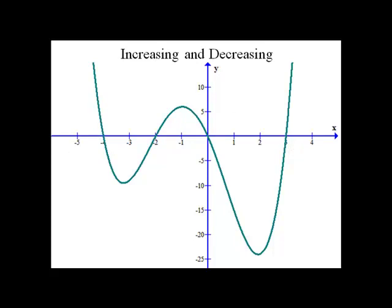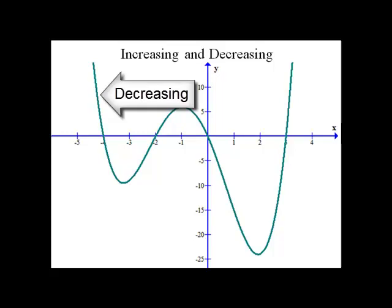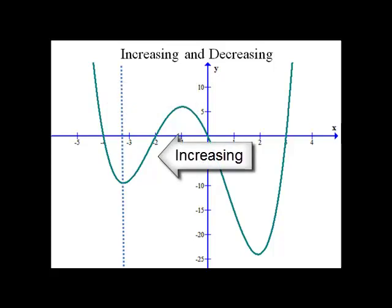Next, we're going to look at the increasing and decreasing behavior of a function. We read a graph from left to right — if it goes down, it's decreasing; if it goes up, it's increasing. So we're going to cut the graph off where there are turning points. Notice that the graph starts out decreasing, but then at about negative three point one, it switches and goes to increasing.